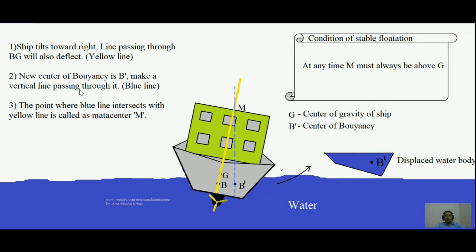Now, keeping the line passing through BG the same, draw a vertical line from the new center of buoyancy B dash. Wherever it meets with the yellow line passing through BG is called the metacenter M of this floating body. The rule is: to make the body stably float, this metacenter must be above the center of gravity G. Only in that case will the floating body stably float; otherwise it will overturn.